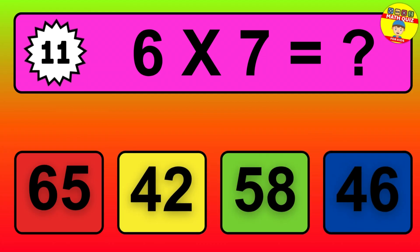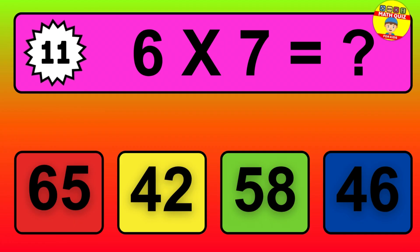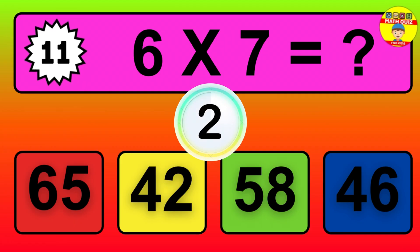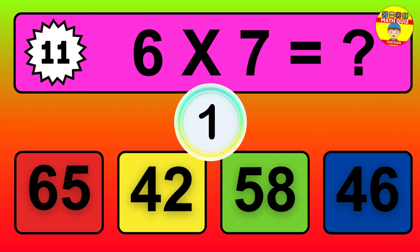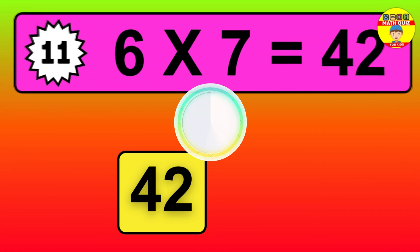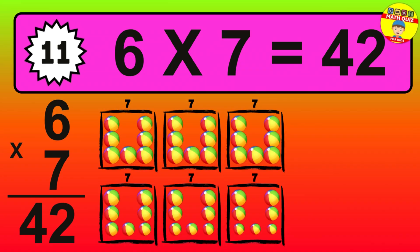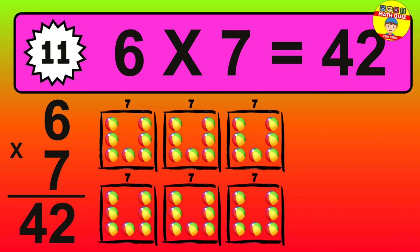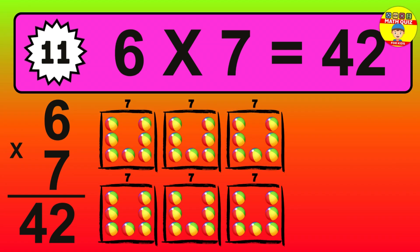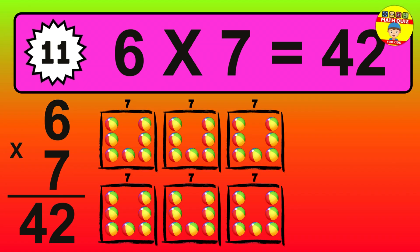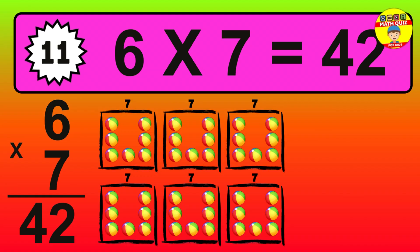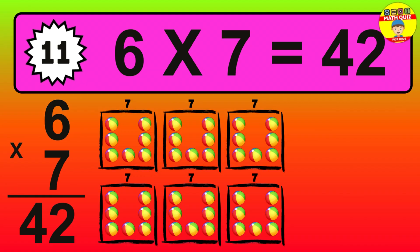Question 11. 6 times 7 equals what? The answer is 6 times 7 is 42. To calculate, we have 6 groups with 7 balls each one. So, how many balls do we have? 42 balls.